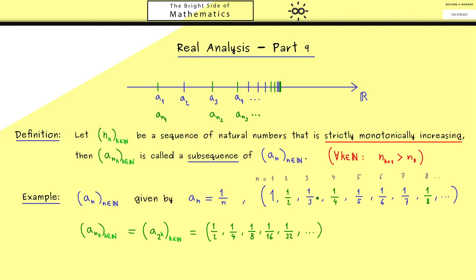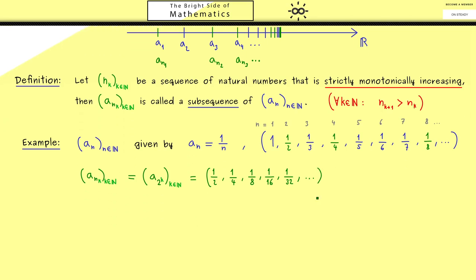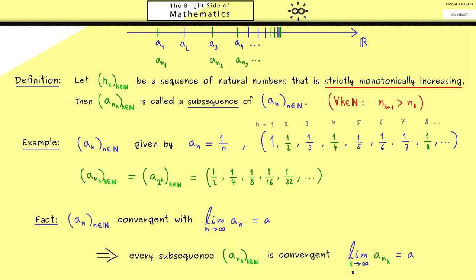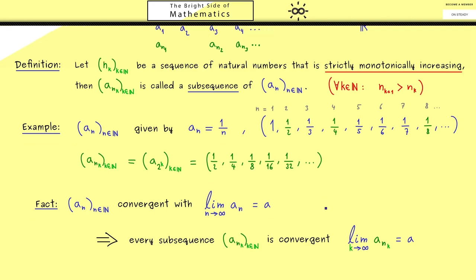One thing we didn't discuss yet is what happens with the limit when we go to a subsequence. In our example here you see the limit is 0 for this sequence but also for this sequence. Or in other words we don't change the limit here. Indeed this is a general effect that always holds. So if we have a sequence an where we already know it's convergent with limit a, then any subsequence we can choose is also convergent. Moreover we also know when we calculate the limit which means we send k to infinity we get the same result as before. Maybe that's not so surprising but at this point you could ask why do we even need subsequences.